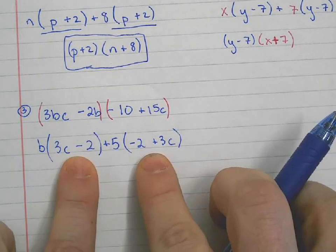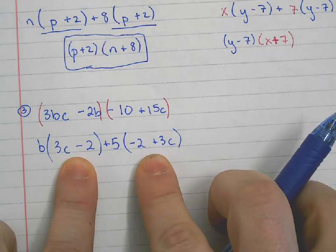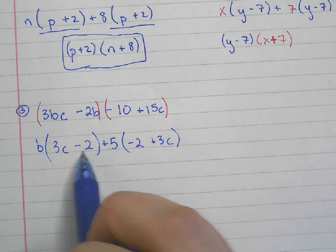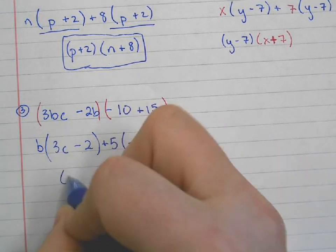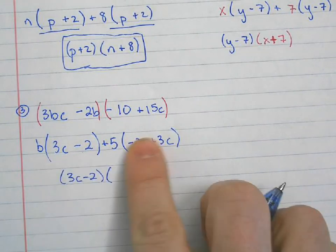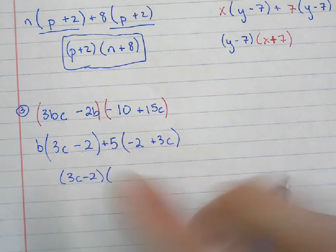Now I can, since they are the same, do we see that they're the same? Any questions about those being the same? Order doesn't matter for addition. So I'm going to factor out my 3C - 2, and if I take the 3C - 2 out, what is left behind? B + 5.